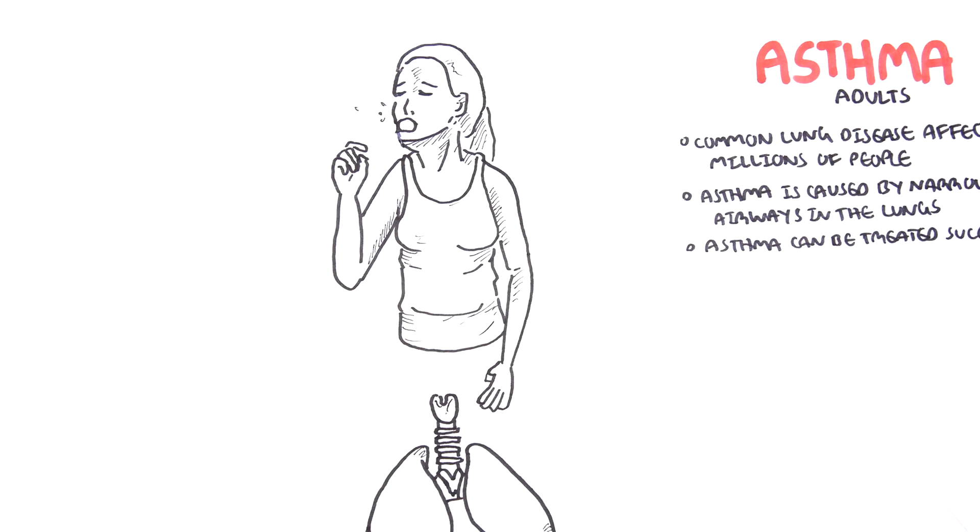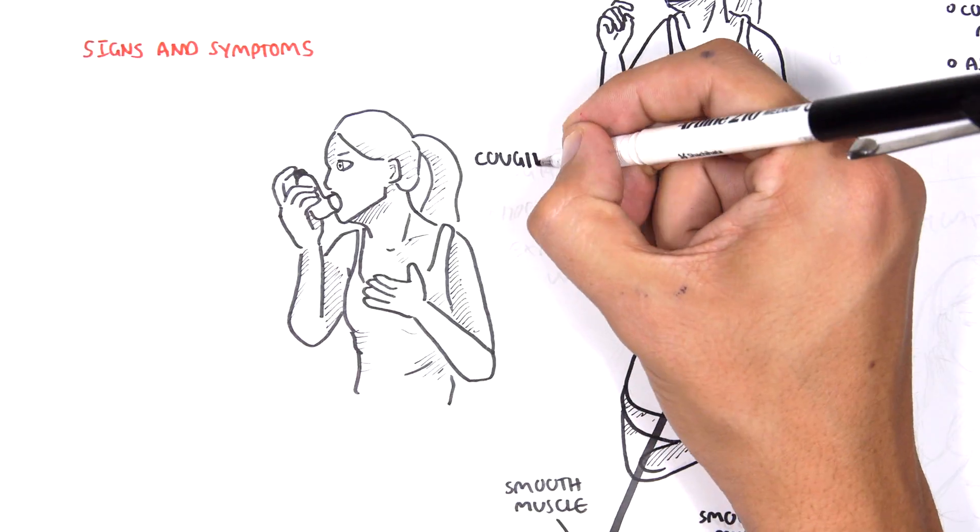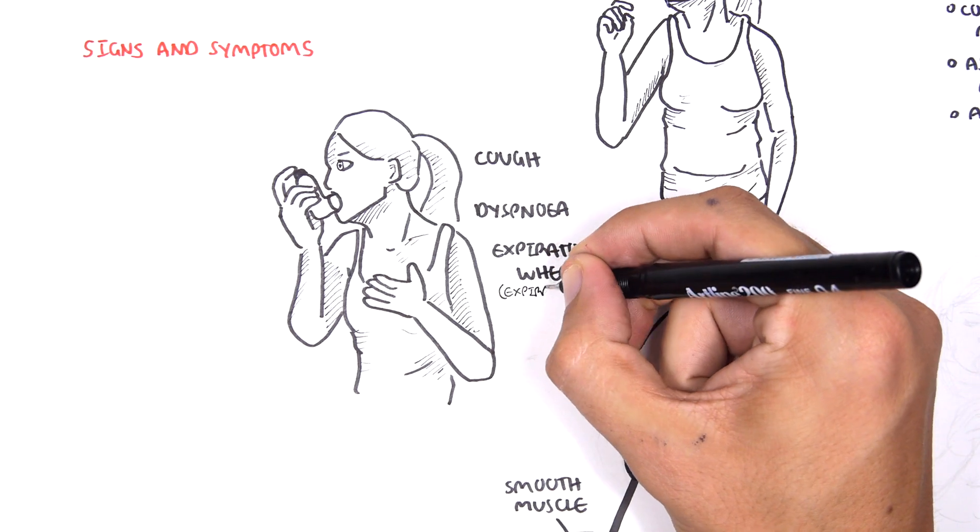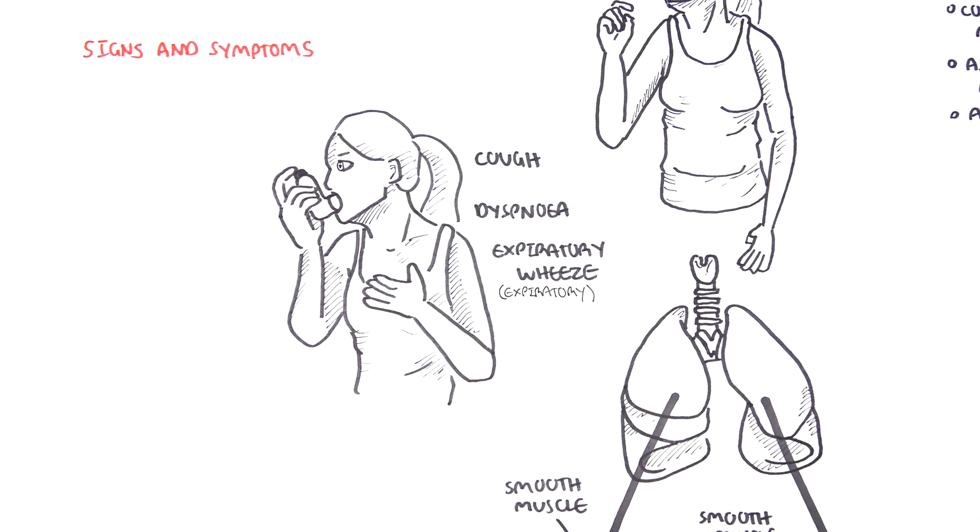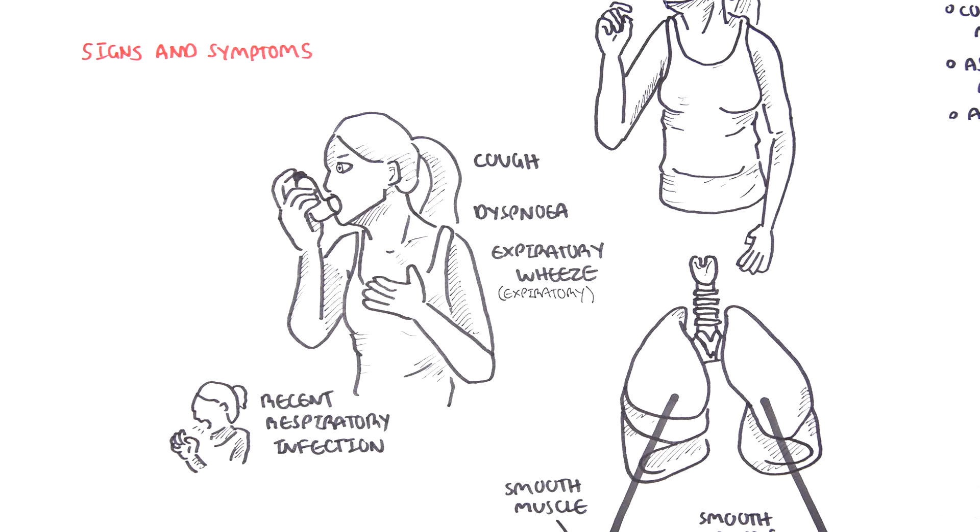These three features result in the signs and symptoms of asthma which include cough, dyspnea or shortness of breath, and an expiratory wheeze. People with asthma also may present with recent respiratory tract infections.